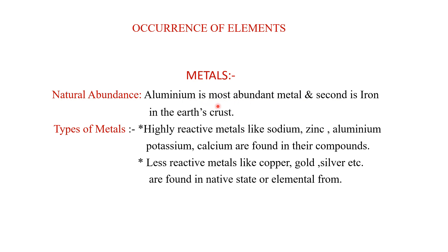We will discuss extraction in coming topics. Now let us see the types of metals. On the basis of reactivity, metals are divided into two types. First, highly reactive metals like sodium, zinc, aluminium, potassium, and calcium — they are found in compound form because they react with other substances and form compounds. Second, metals like copper, gold, and silver are found in their native or elemental form because they are very less reactive and do not react with other elements.